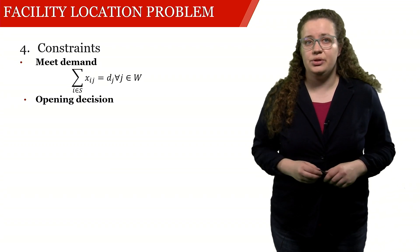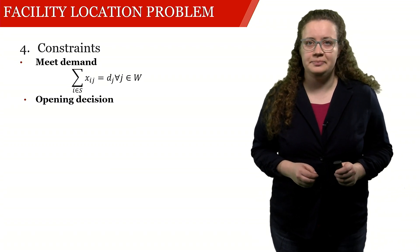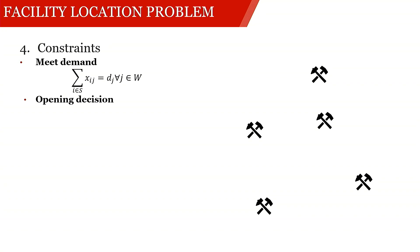The second thing that we have to consider is the opening decision. Let's say we have these five workshops here and then we have three candidate sawmills. If all candidate sawmills are open, we can directly allocate them to the closest sawmill and transport from there. But if this sawmill for example is closed, then we cannot transport from there and we have to reassign these transportation demands to other sawmills.